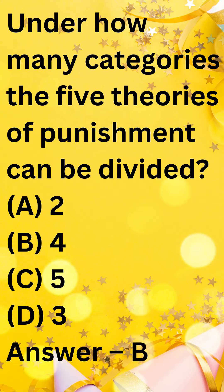The 5 theories of punishment can be divided into 4 categories. Retributive theories focus on punishing the offender for the crime they committed, as a form of justice. Deterrent theories focus on preventing future crimes by disincentivizing potential offenders. Rehabilitative theories focus on helping the offender change their behavior and become a productive member of society. Incapacitative theories focus on preventing the offender from committing future crimes by removing them from society or restricting their freedom.